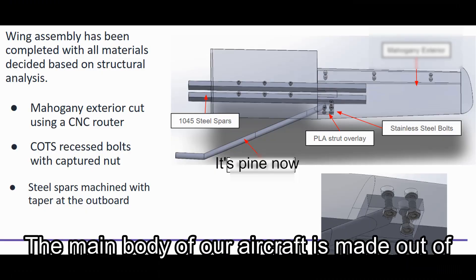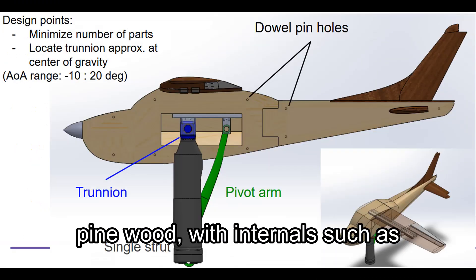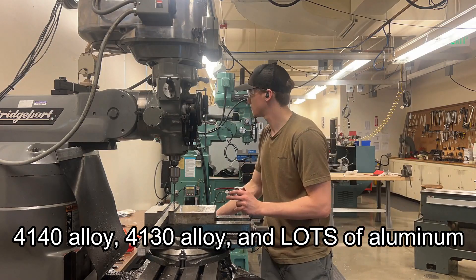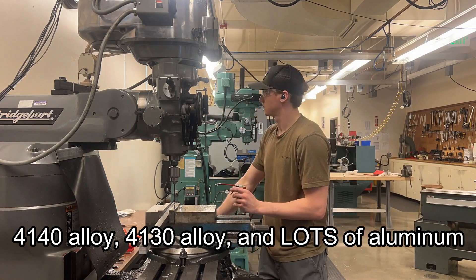The main body of our aircraft is made out of pine wood with internals such as 4140 alloy, 4130 alloy, as well as lots and lots of aluminum.